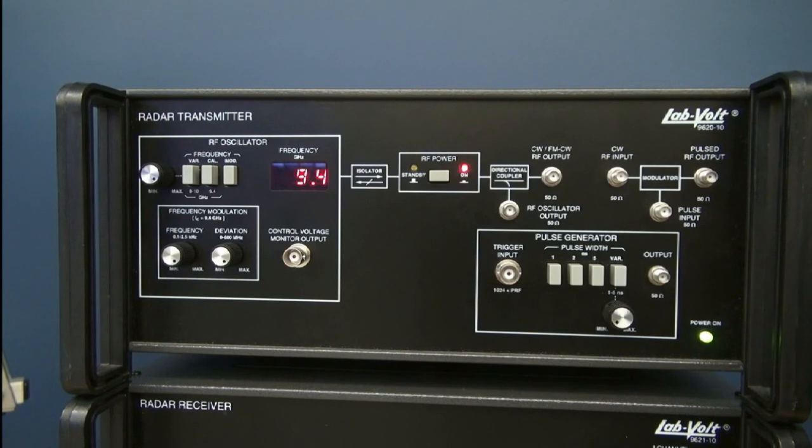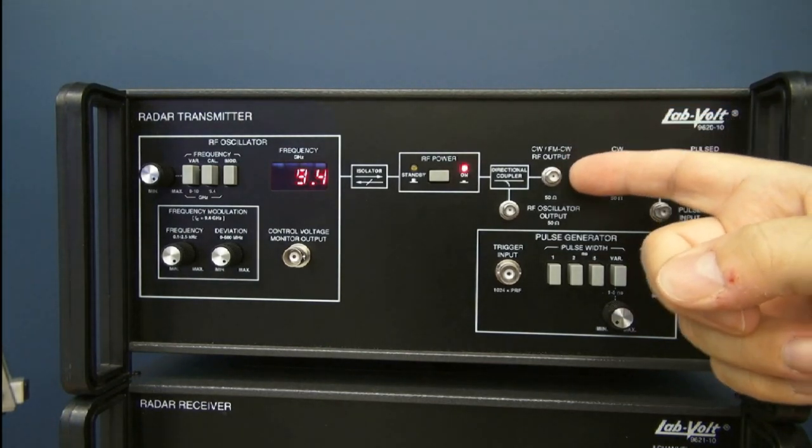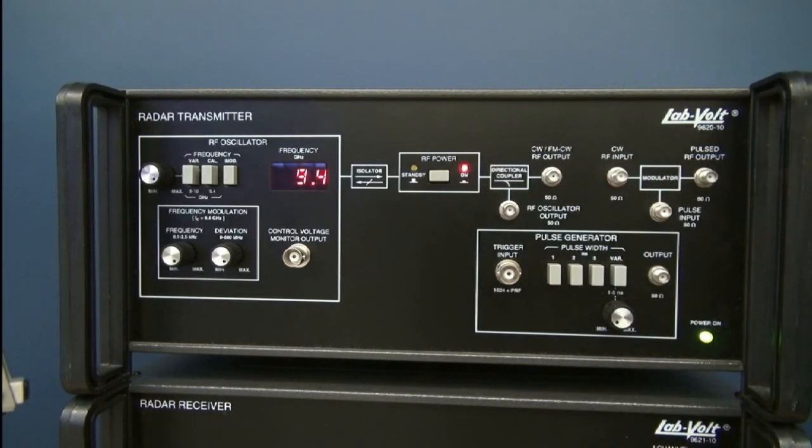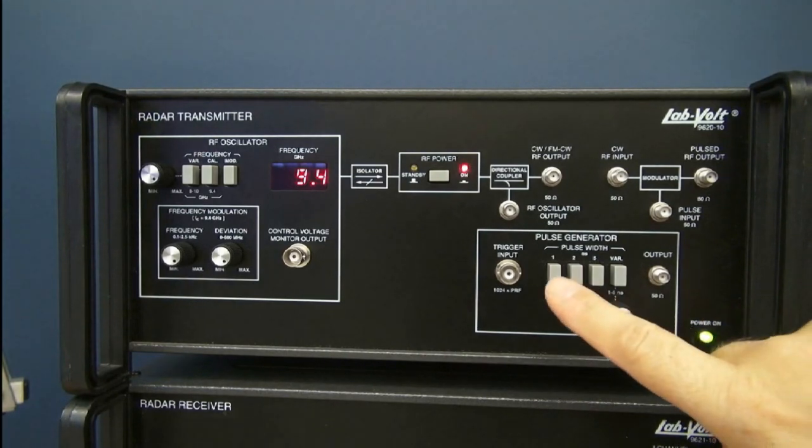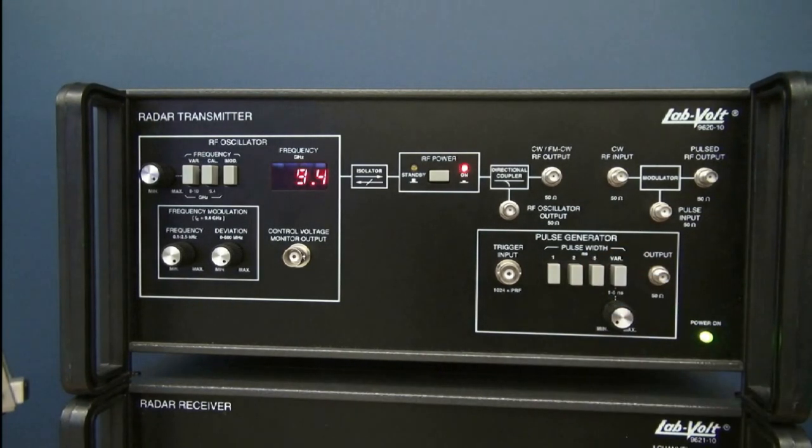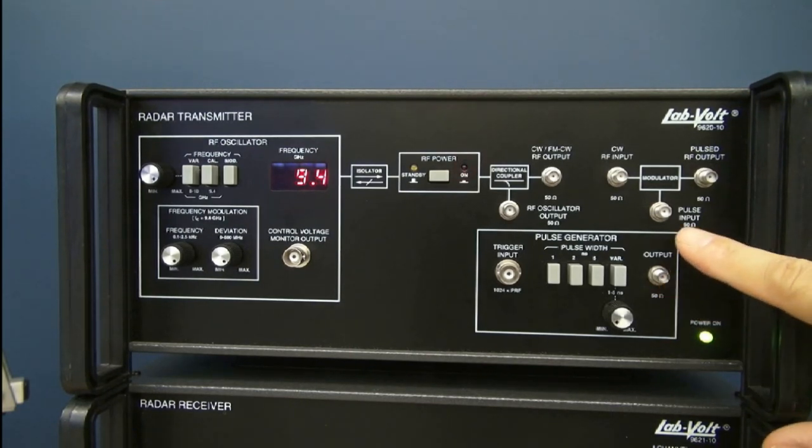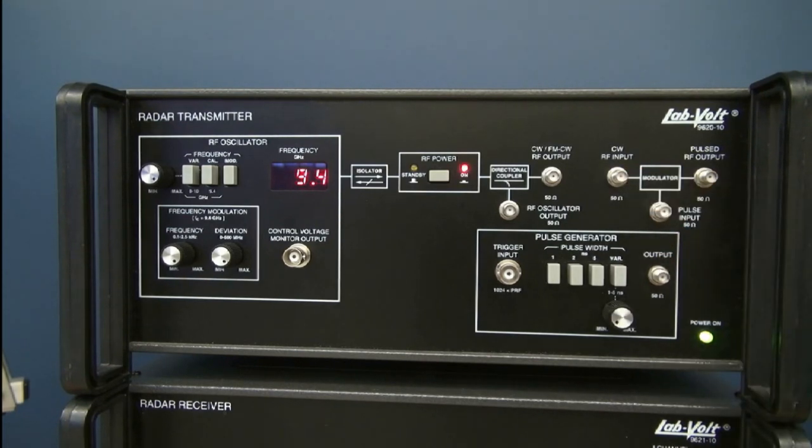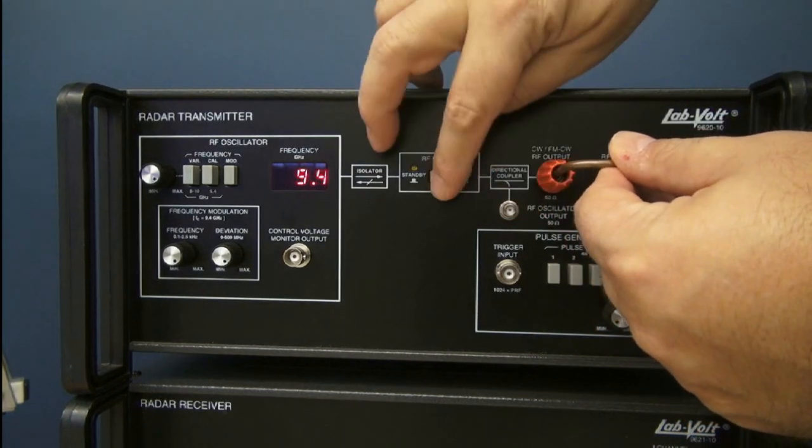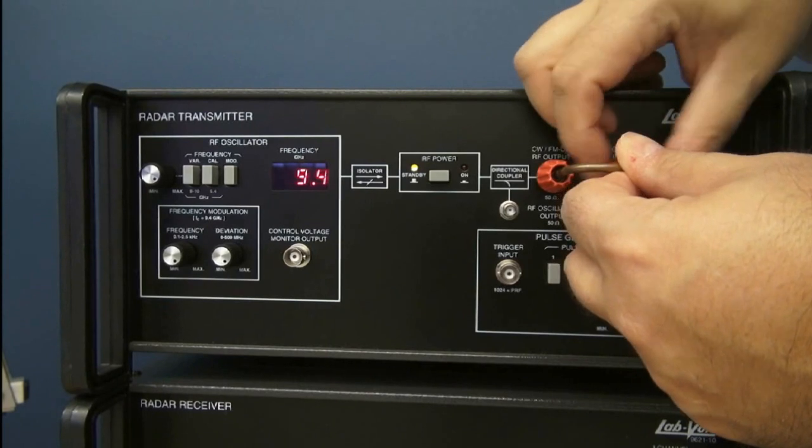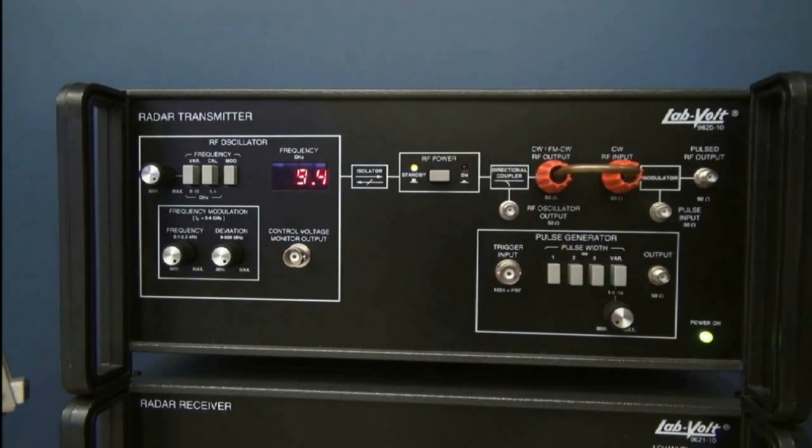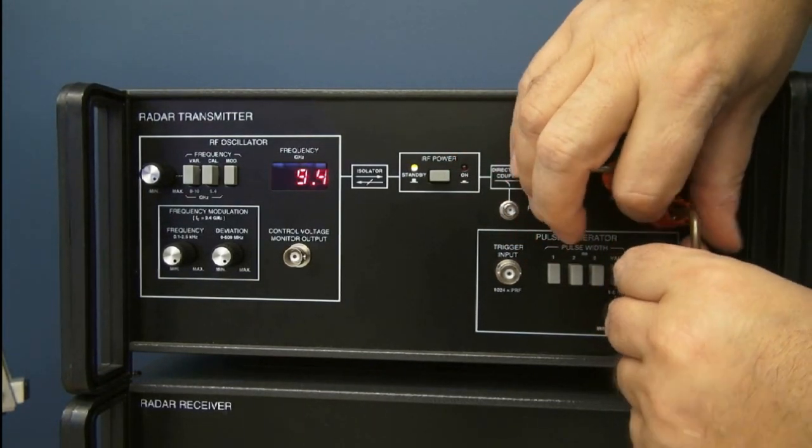Now if I want to do continuous wave radar, I can take the output directly from here, or if I want to do FM radar, I can take it from here as well. But in the demonstration I want to do this morning, I want to do pulsed radar. So I will use a pulse generator here, where I can select my pulse width anywhere between 1 and 5 nanoseconds, which is extremely short because I want to have a very fine range resolution in the classroom. This allows me to have a resolution in the order of 6 inches or 15 centimeters. The output of my pulse generator will go in my pulse input to give me a pulsed signal.